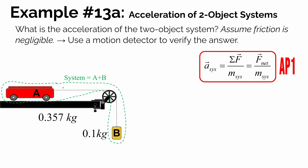We're going to define the system as both cart A and the hanging mass, object B. To find the acceleration of the system, we need to take the sum of the forces on the entire system and then divide by the mass of the entire system, which is 0.357 kilograms plus 0.1 kilograms, because the net force is accelerating all of this mass.